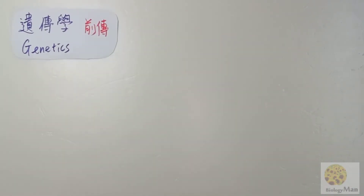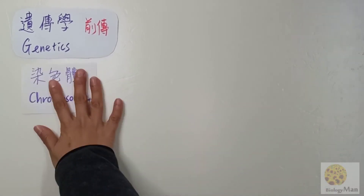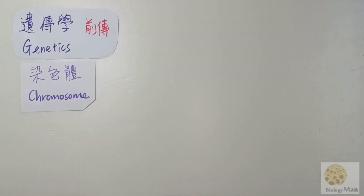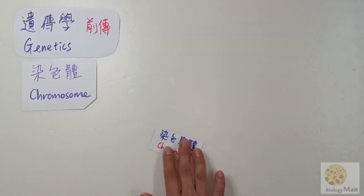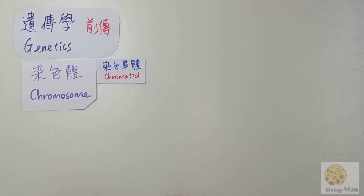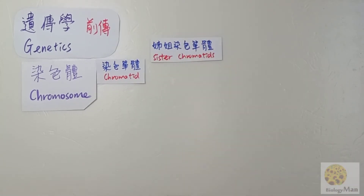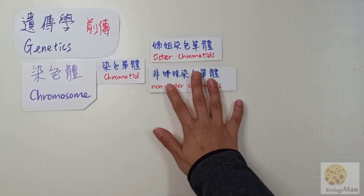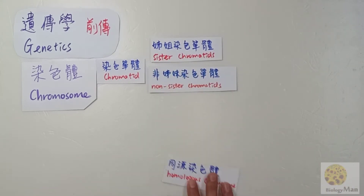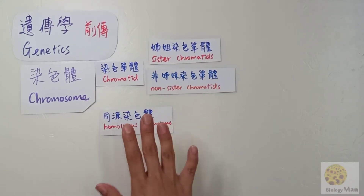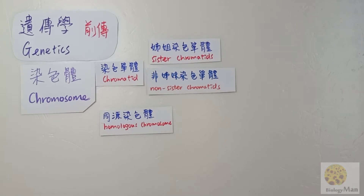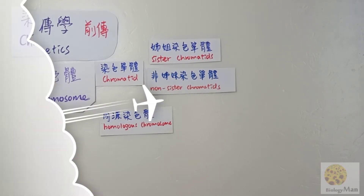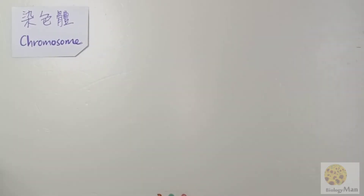In this video we will talk about chromosomes. In the concept of chromosomes, you will learn another term called chromatid, and we have another term called sister chromatids and non-sister chromatids. There is another very important terminology: the homologous chromosome. You will always see this term.